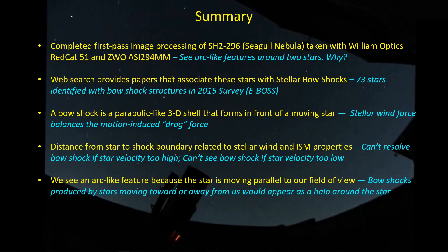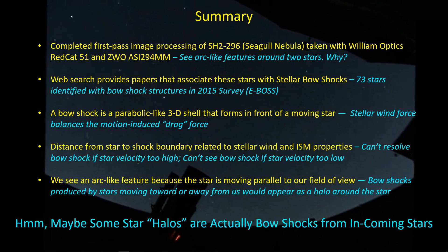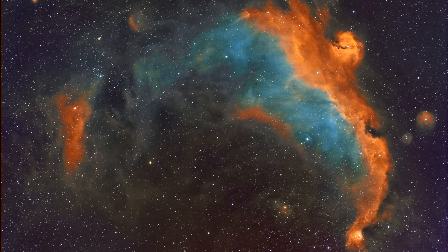Another important thing: we're only going to see this arc-like feature if the star is basically moving across our field of view. Otherwise, we would not see an arc — we would instead see something that looks more like a halo. It makes me wonder if some of those halos I've been complaining about are actually stellar bow shocks for stars that are moving toward me or away from me. Thanks for joining me on this trip down the rabbit hole. Be sure to take a look at those images you're collecting — there are lots of interesting little features in there. Take care and I'll see you later.